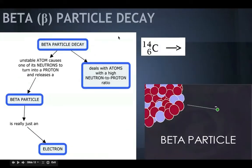Alright, next we have beta particle decay. So let's start over here in the flow chart. Beta particle decay. Unstable atom causes one of its neutrons to turn into a proton and also release a beta particle, which is really just an electron. Okay? This deals with atoms with high neutron to proton ratio. So we're going to look at this example right here for carbon, carbon-14.